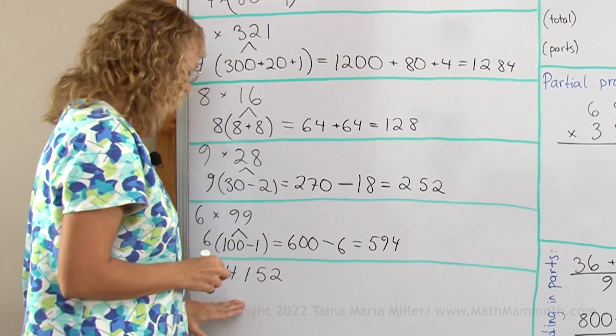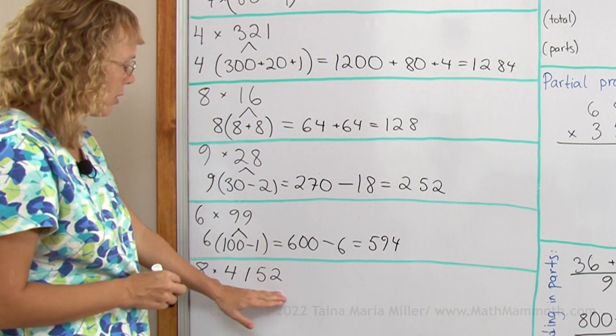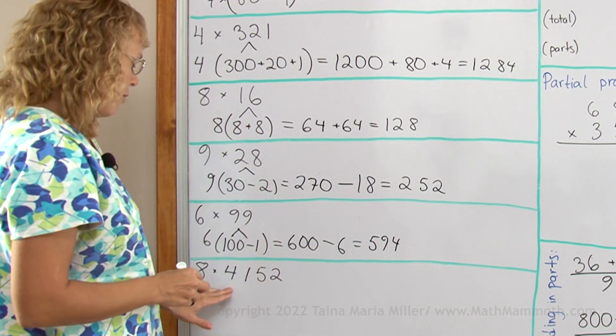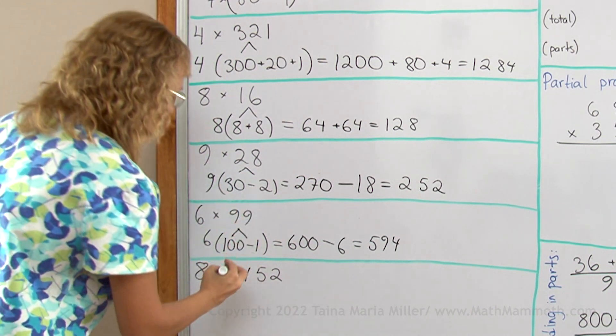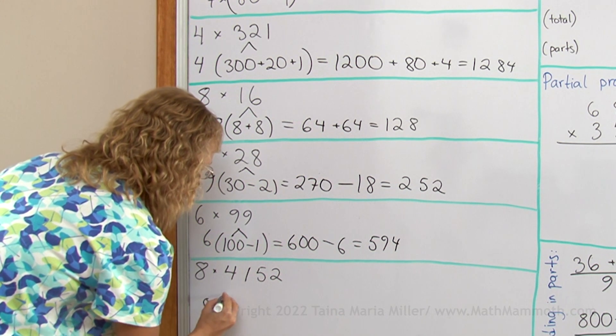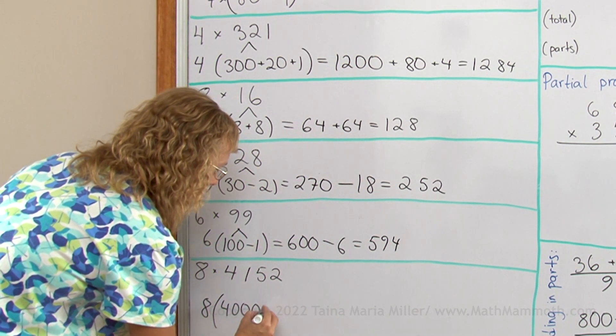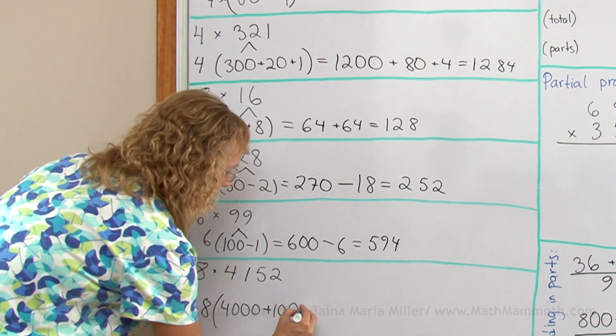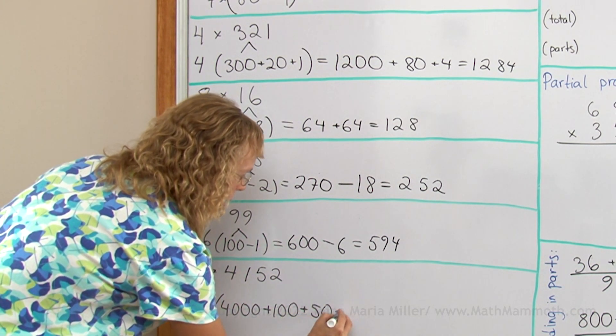And one last example. We have here a number that is in the thousands, so I can break it into 4 parts basically. This would be the same as 8 times 4000 plus 100 plus 50 plus 2.